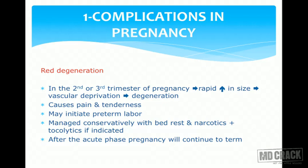The complications of fibroids in pregnancy: red degeneration is very commonly seen, usually in the second or third trimester. There is a rapid increase in the size of the fibroid, then vascular deprivation or thrombosis, leading to ischemia, necrosis, and degeneration. This causes pain and tenderness and may initiate preterm labor.